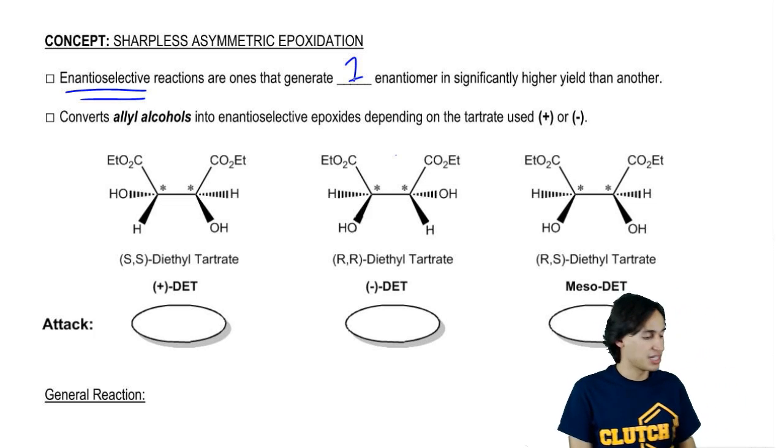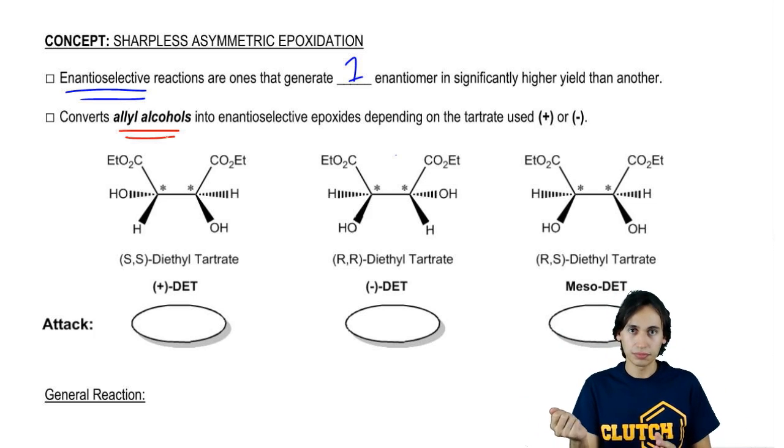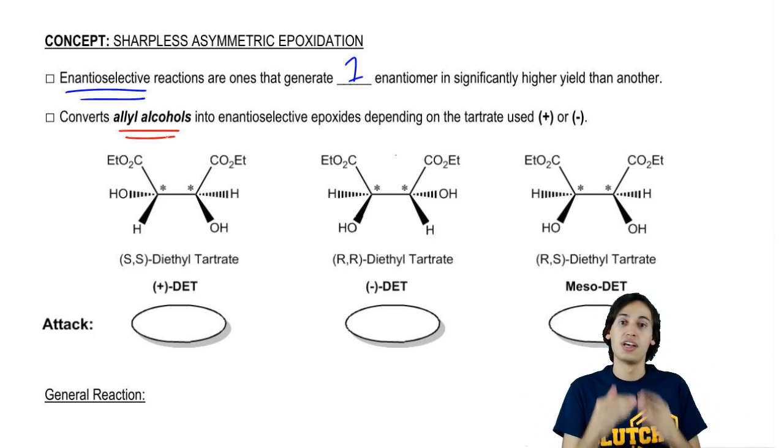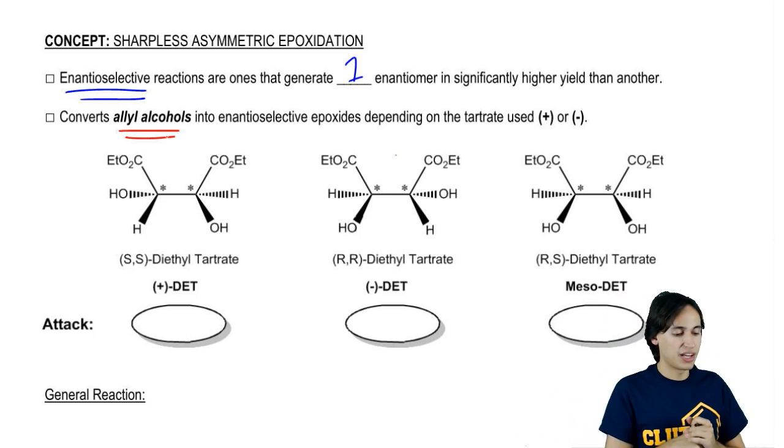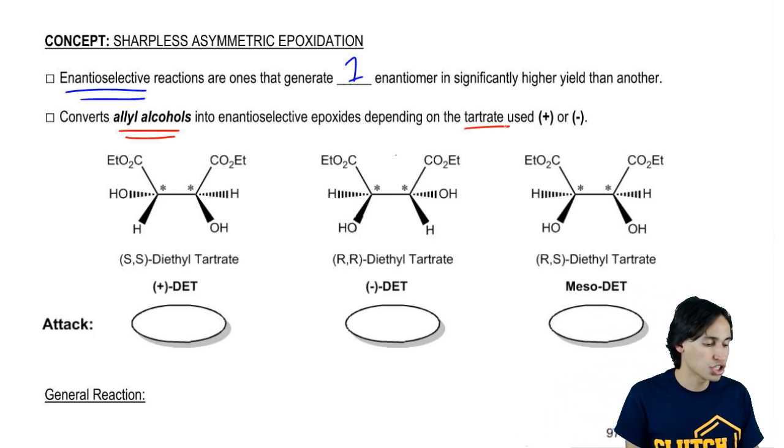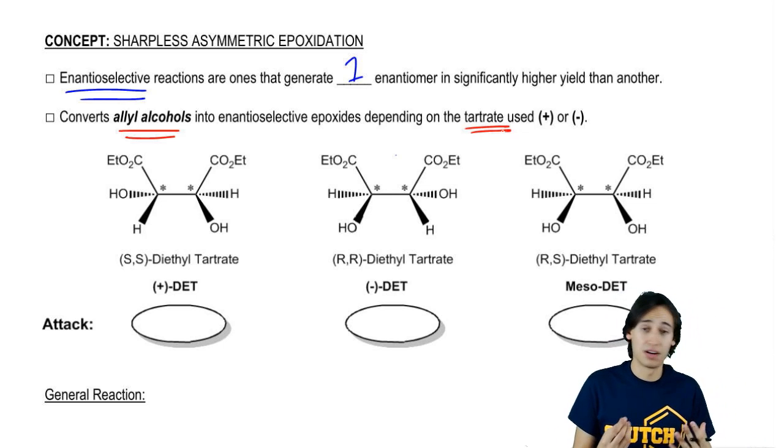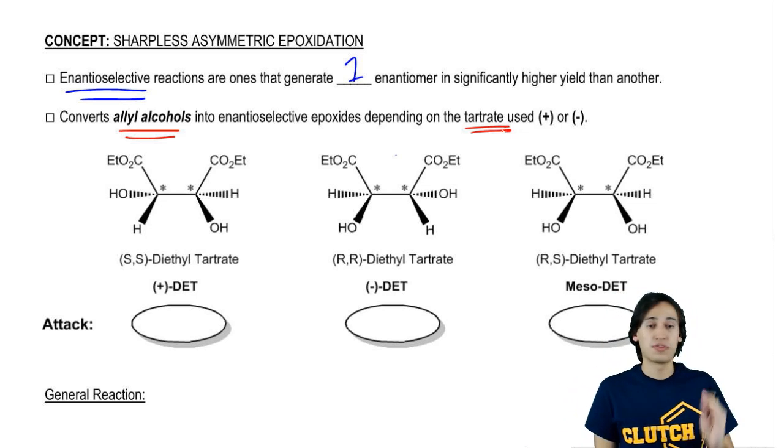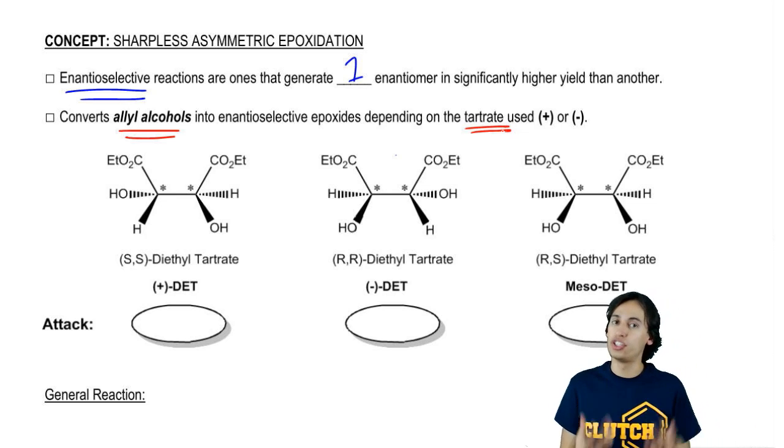So the way this reaction works is that it's going to convert allyl alcohols. That means it's an alcohol that has a CH2 and then a double bond. Allyl is a position that says that you're next to a double bond, not directly attached to one. Then it's going to generate a certain epoxide based on the type of tartrate that is used. These tartrates are basically functional groups that have different chiral centers. What you're going to find is that there's three different possibilities of types of tartrates that I could use in this reaction.